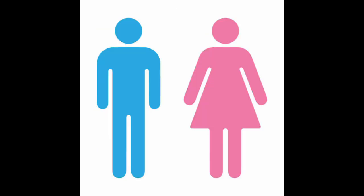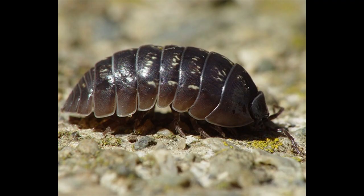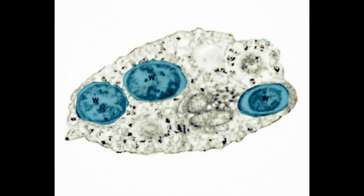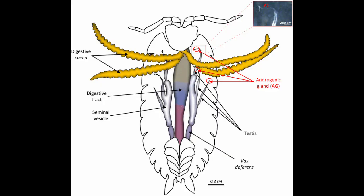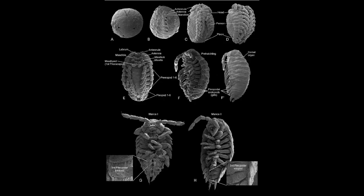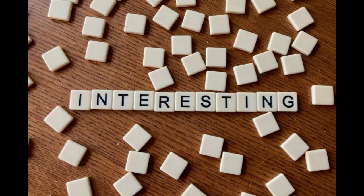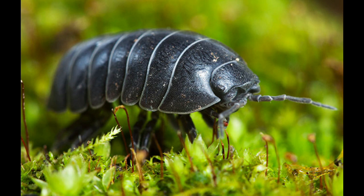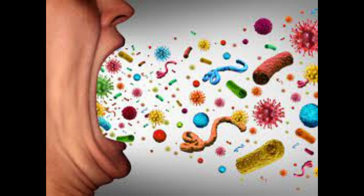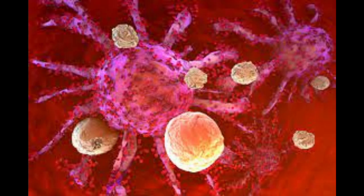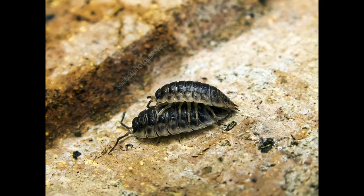Male feminisation occurs in Armadillidium vulgare, commonly known as the pill bug, though wood lice and roly-poly are even more common names. Wolbachia feminises male wood lice by preventing the androgenic gland differentiation responsible for male development during the embryonic phase. Interestingly, most wild populations of wood lice are not infected by Wolbachia, with it being demonstrated that infected females have lower survivability and reduced immunocompetence but with a greater reproductive investment.